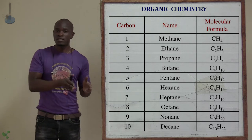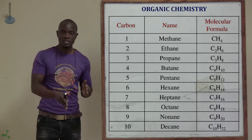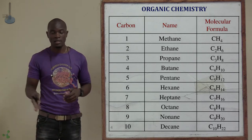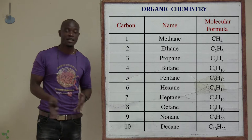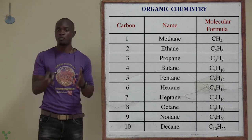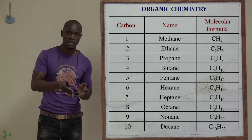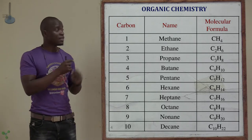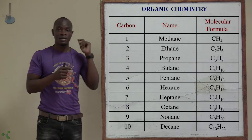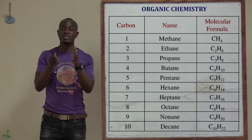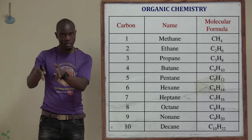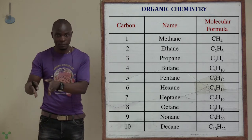The names of all these structures end with '-ane'. We have methane, ethane, propane, and butane. Their names end with A-N-E because it means that they are in the alkane family.